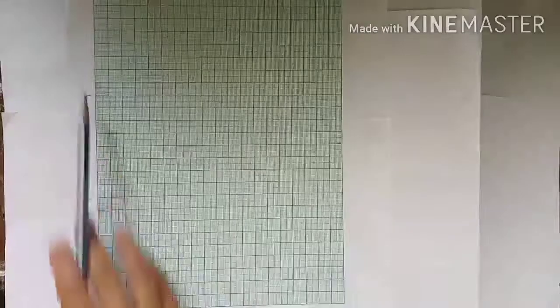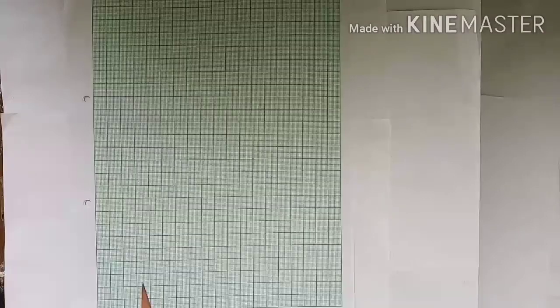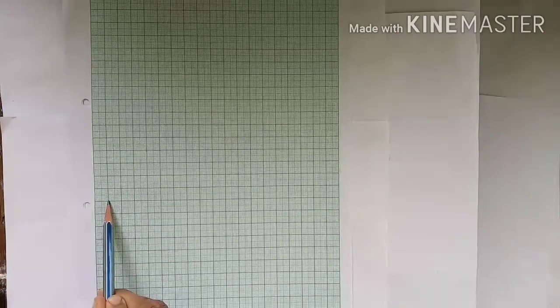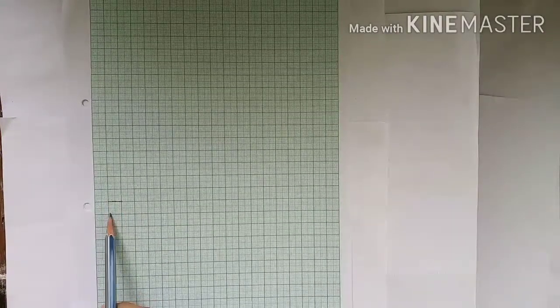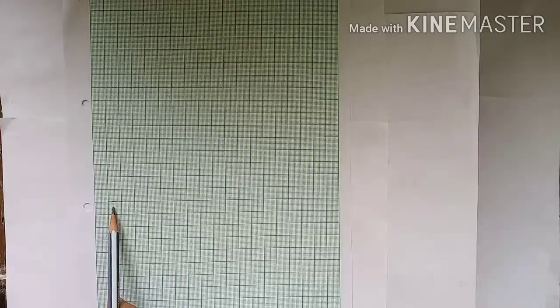This is a graph paper shown here. There are some bold lines. These are bold lines. And some faint lines are given also here.